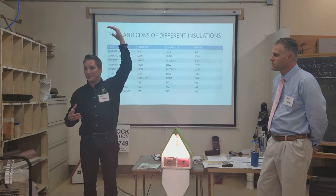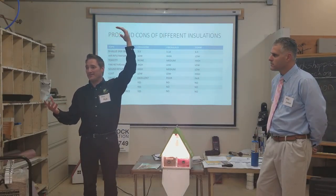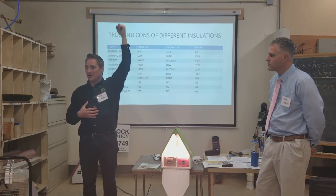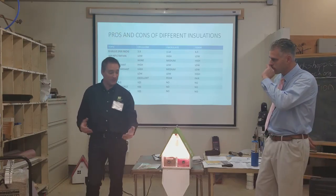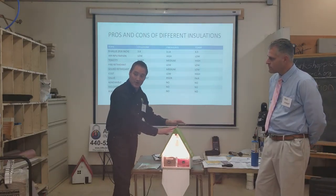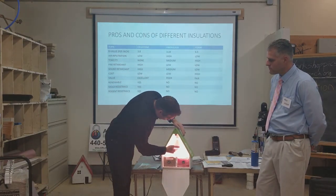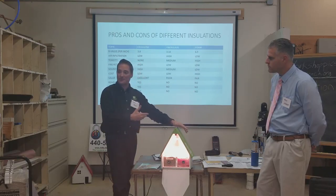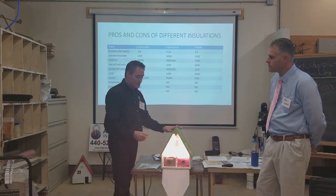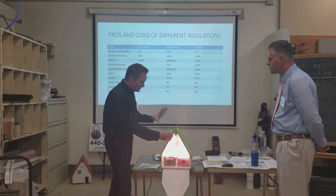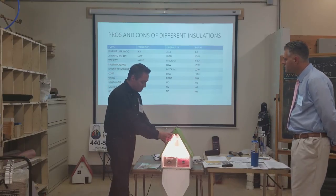If heat only rose, we'd be dead. The Sun is in outer space and we're not here. Radiant heat is very important in life, and this tool shows radiant heat. This light actually represents the Sun. So we've got radiant heat coming through the building, conducting through, and radiating through your attic spaces.